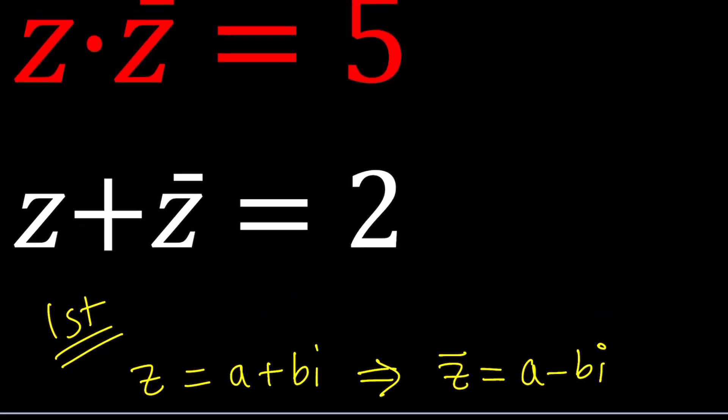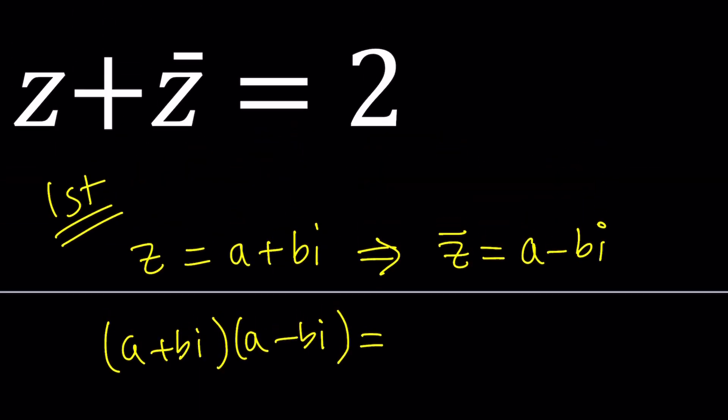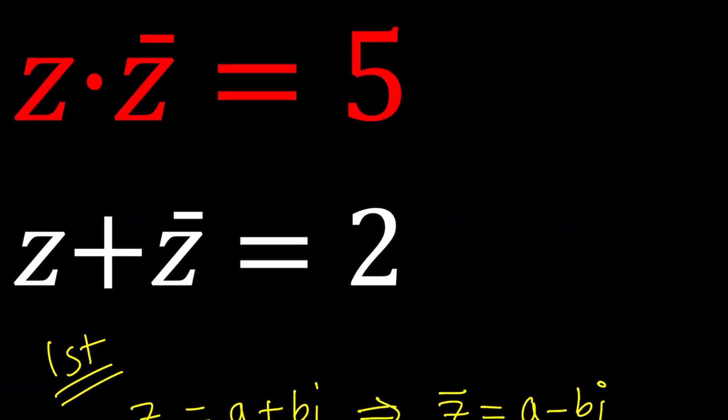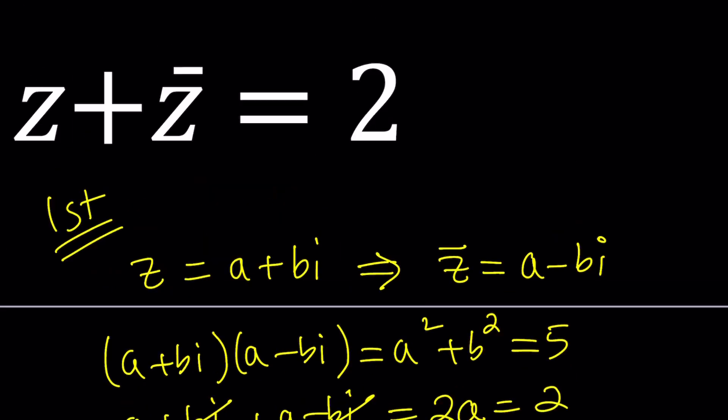Let's go ahead and plug it in into the first equation: A plus B I multiply by A minus B I. And remember when you multiply two conjugates you get A squared plus B squared, which is a sum of two squares. So that's five. What happens if you add two conjugates? Well the imaginary parts cancel out leaving us with 2A, and in this case it's equal to two. Awesome. That was easy.